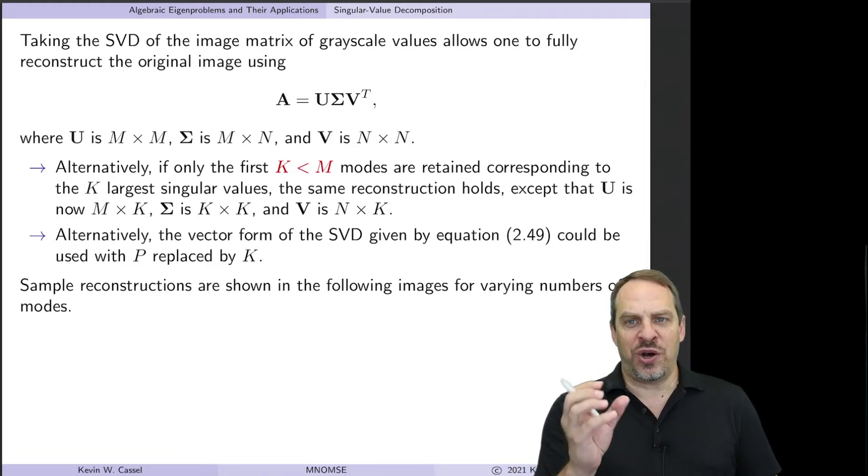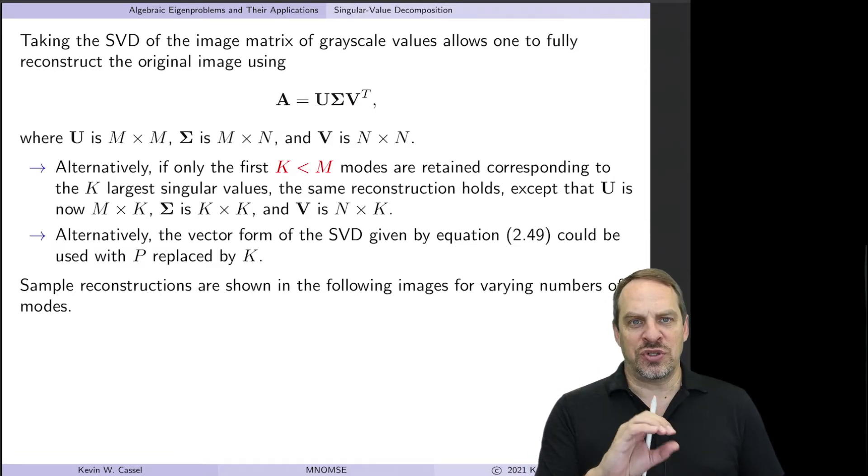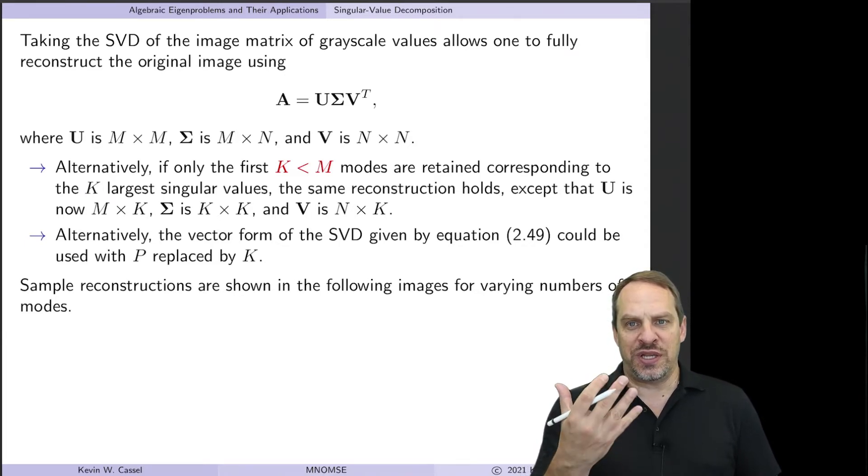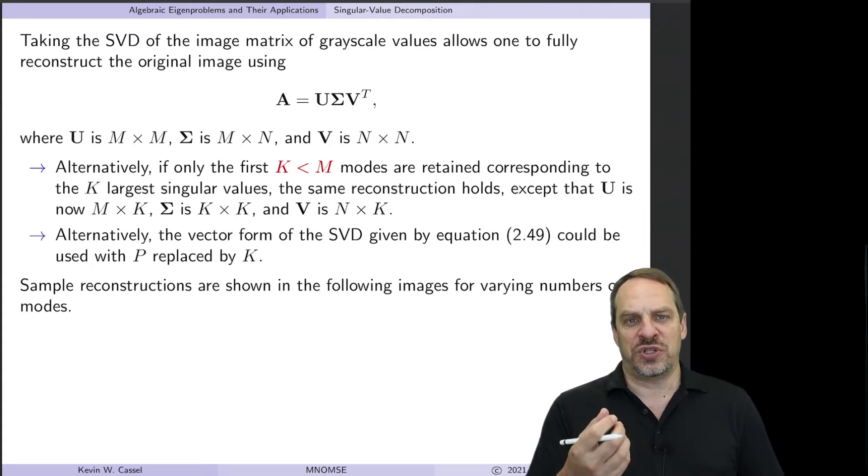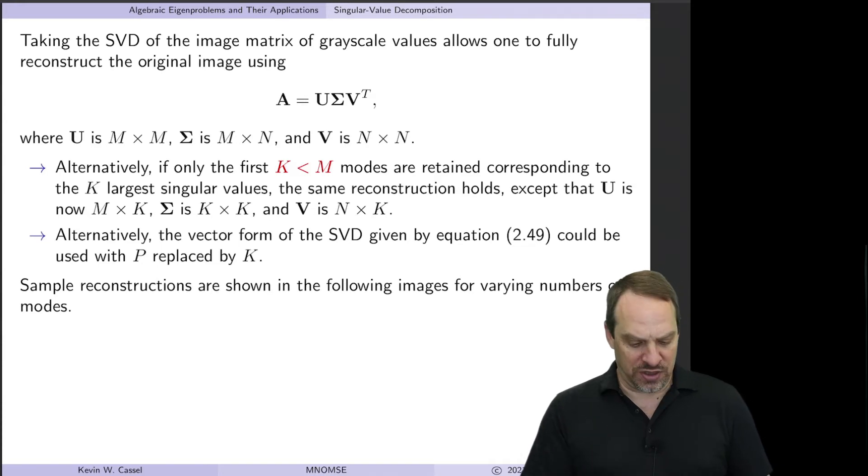And we want to think about how we could reconstruct that image using less information than what's contained in the original image. We already hinted at how this can be done in the previous video by using singular value decomposition and only keeping those modes for which the singular values are large enough to warrant being retained.